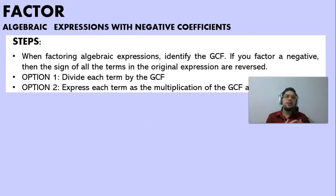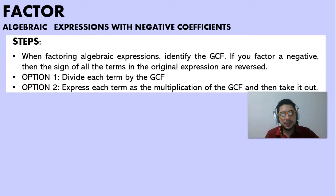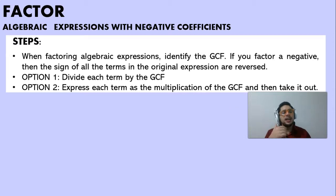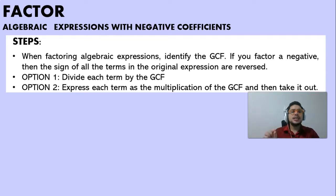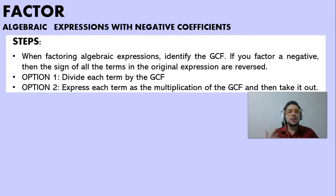We have to remember some basic steps when factoring or getting the greatest common factor of an algebraic expression. The first thing we have to do is identify if we have a greatest common factor. If we factor a negative, then the sign of all the terms in the original expression are changed to their opposite — they are reversed. This is very helpful whenever all or most of the terms are negative.